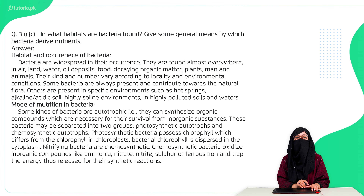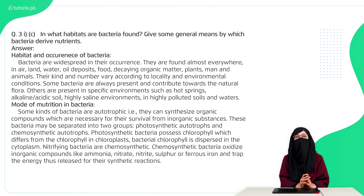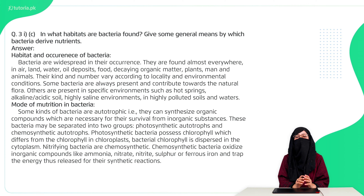The third question: in which habitat are bacteria found, and by which general means do bacteria derive nutrients? Bacteria are mostly found in air, water, soil, and the environment. Their mode of nutrition is autotrophic and heterotrophic. Autotrophic is also called chemotrophic or photosynthetic, and heterotrophic is also called absorptive, including nitrifying bacteria.